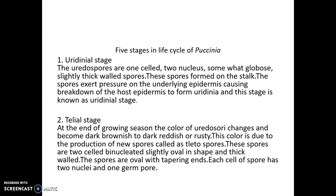Number two is the telial stage. The telial stage is found in the middle of the summer season. The mycelium originating from the germination of uredospores begins to form black pustules or sori — teliutosori. These black pustules are called teliutosori and are always formed in the telial stage. It is called the telial stage because teliutosori are found here.